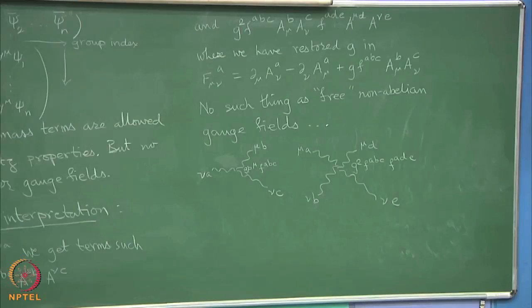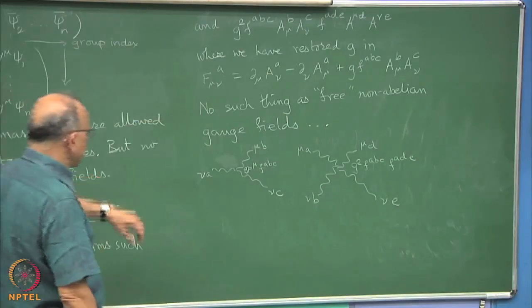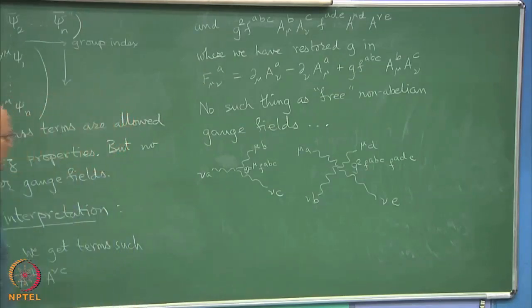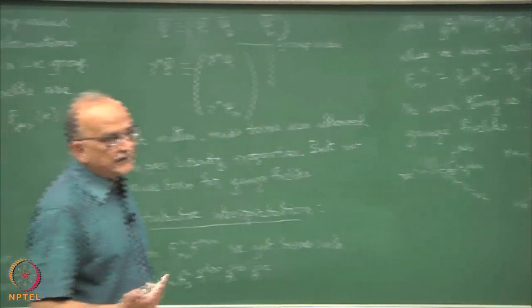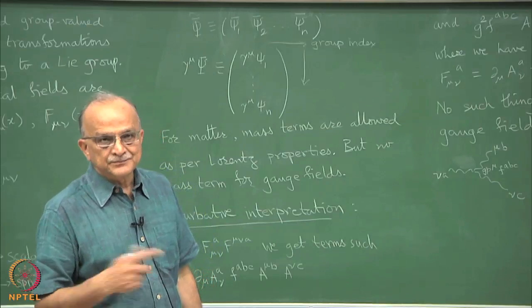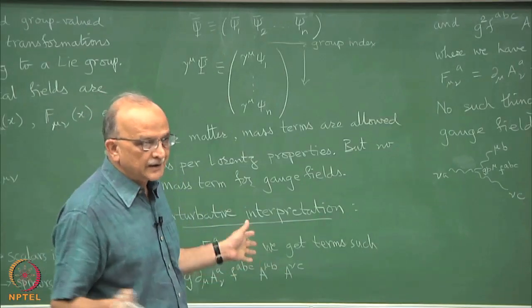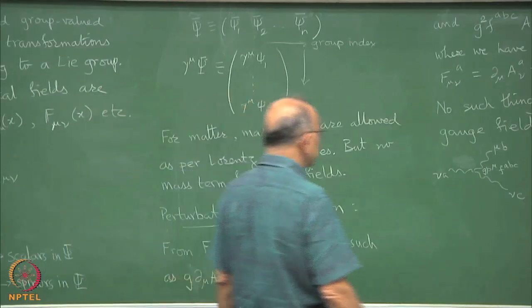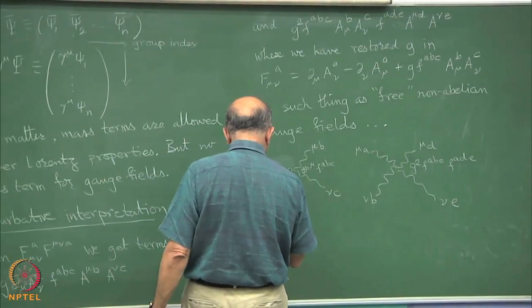If you use these as elements of perturbation theory, then you find that the coupling G gets renormalized in a way that it grows weaker at higher momenta, at higher momenta scattering amplitude. This is the second biggest discovery.